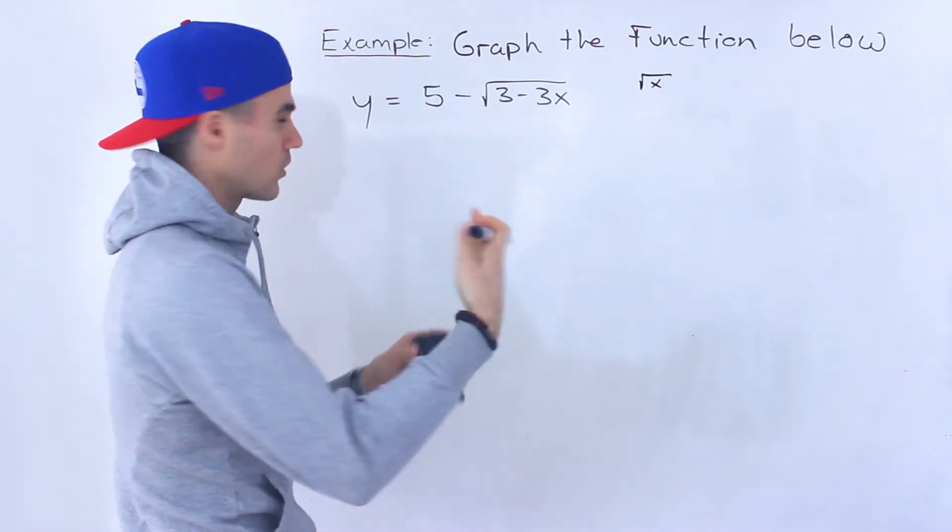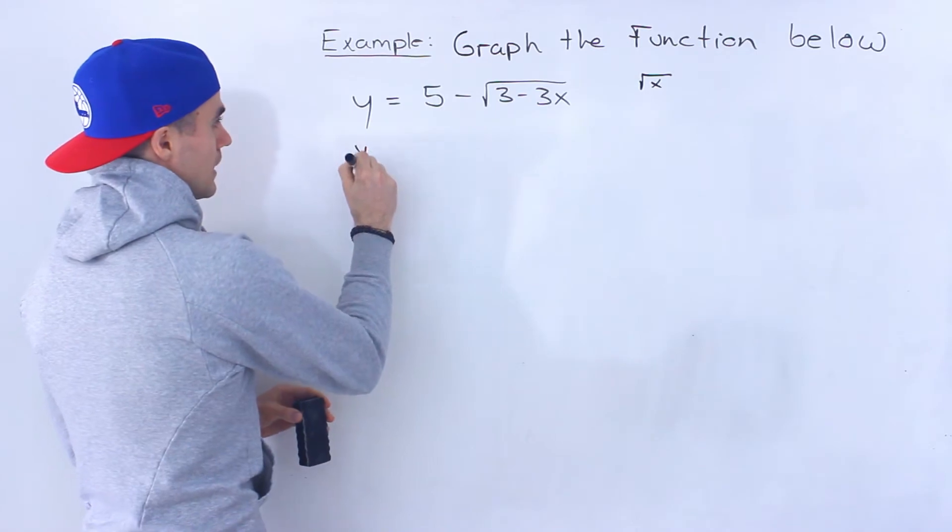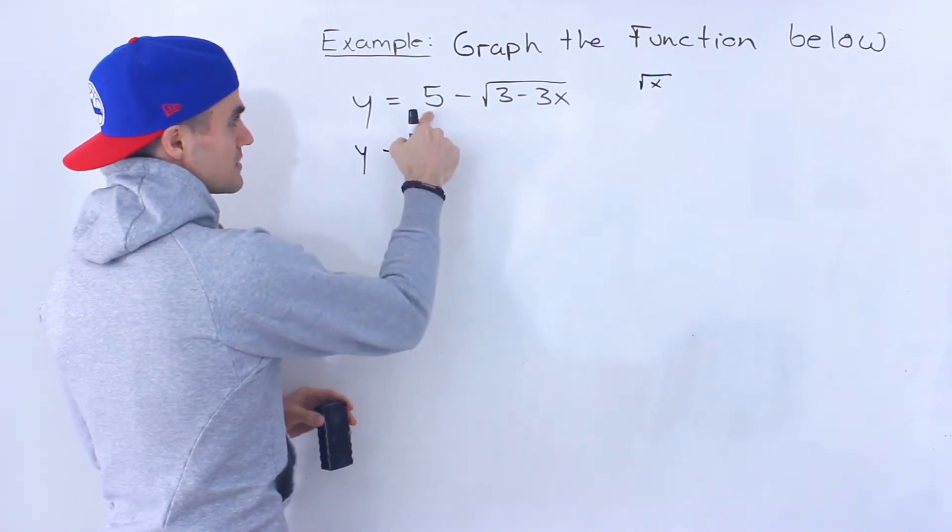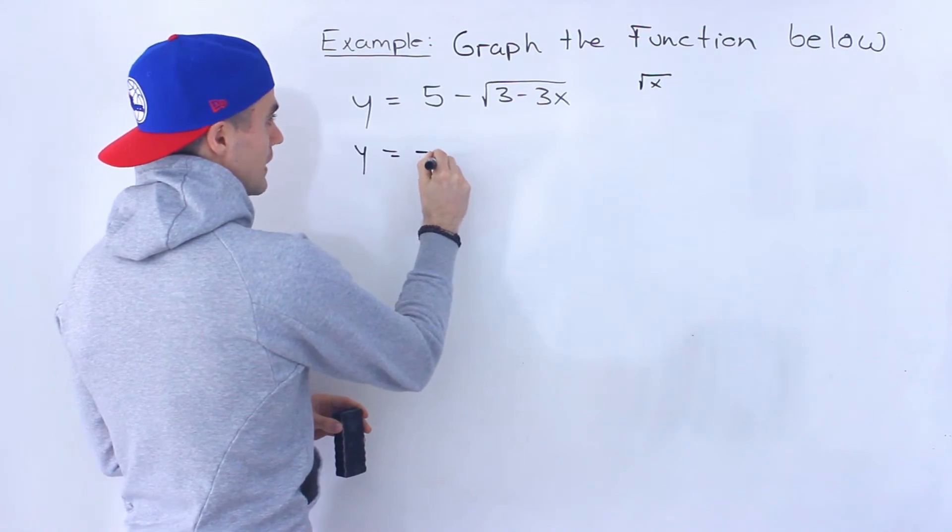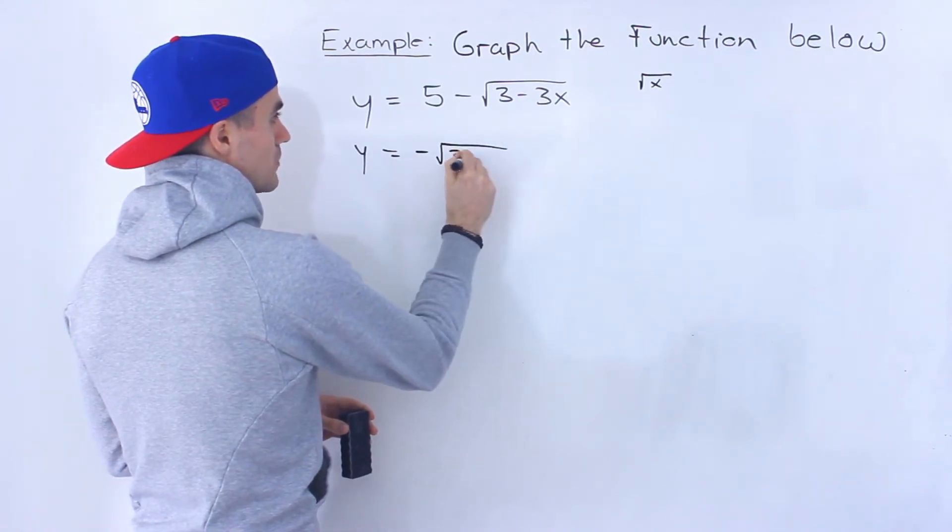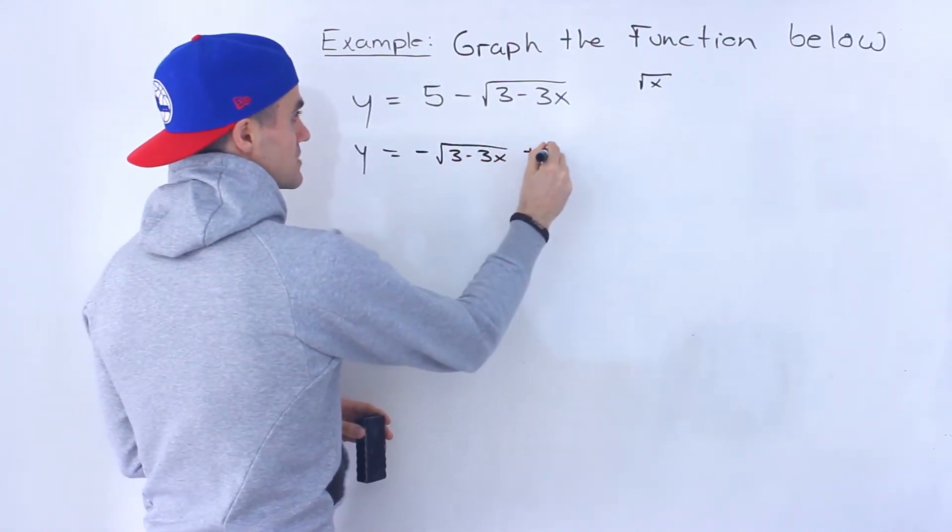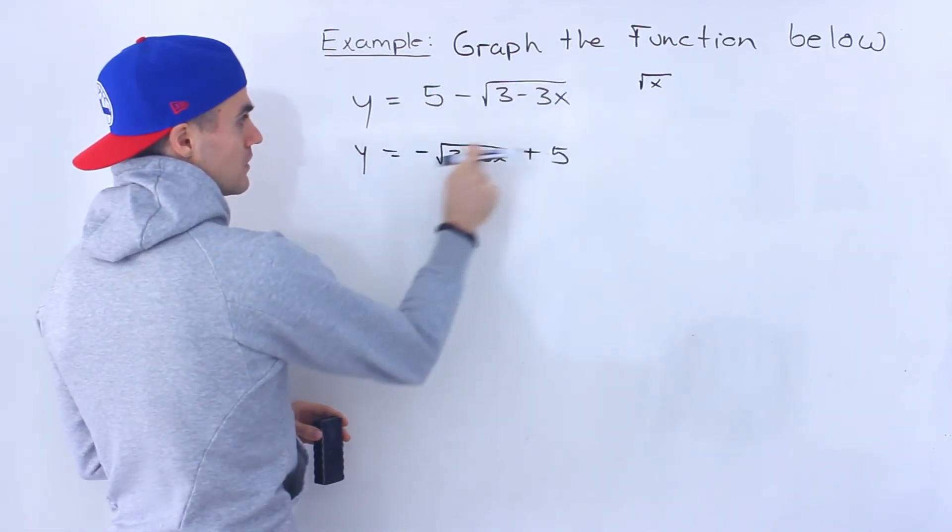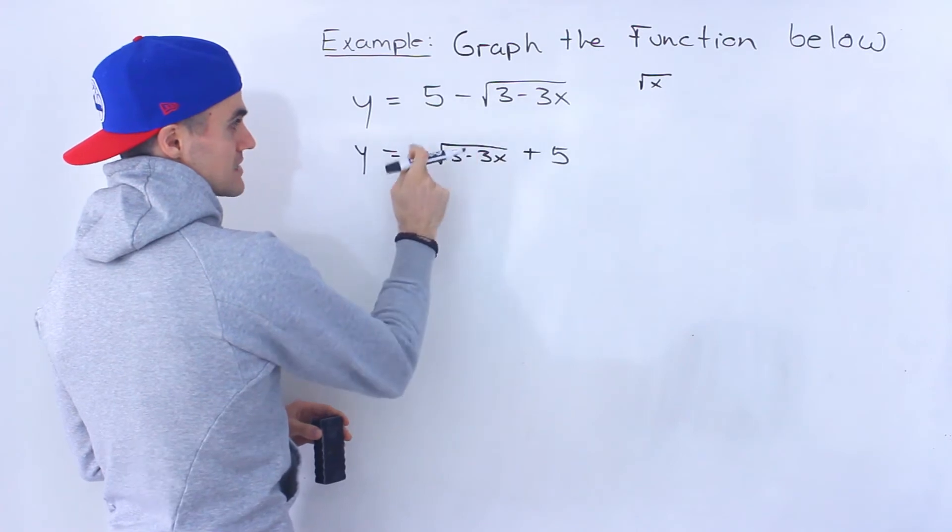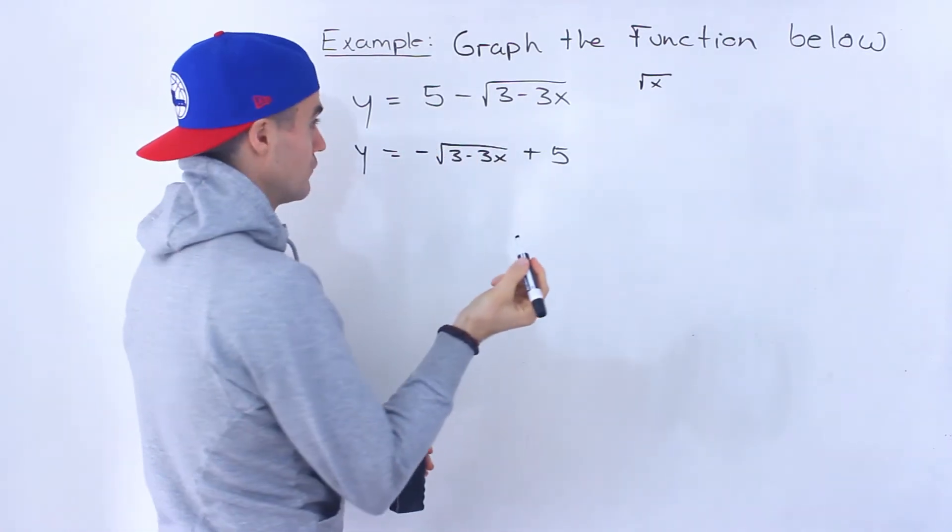To get it into the format that we're more used to, we can take this positive 5 here and bring it over to the end. So we'd have negative square root of 3 minus 3x plus 5. This is a positive 5 when it comes over here, and then that negative stays there. There's like a negative 1 in front there.